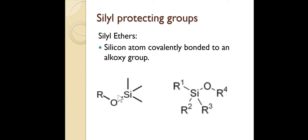Today we will learn about the formation of silyl ethers and their deprotection. So what are silyl ethers? A silyl ether is an organic compound in which a silicon atom is covalently bonded to an alkoxy group. Here you can see the silicon atom covalently bonded to the alkoxy groups. A silyl ether is simply a compound where oxygen and silicon are covalently bonded.